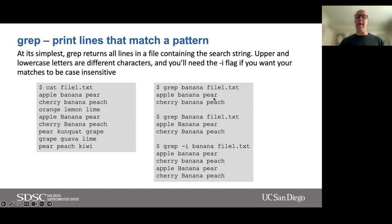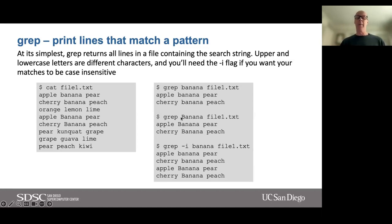So `grep banana file.one.txt` gives me two lines. If I want to find all lines containing Banana with uppercase B, I do `grep Banana file.one.txt`. And finally if I want to ignore case and get all lines containing banana with upper or lowercase b, I do `grep -i banana file.one.txt`.